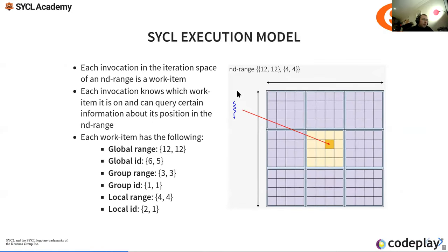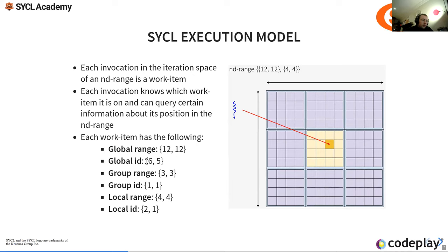For a particular work item in an ND range with global range 12 by 12, that work item has global ID six-five. The group range — the number of groups, or blocks in CUDA terminology — is three by three. The group ID is one-one, meaning the second group in each dimension.